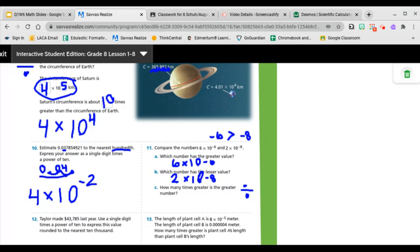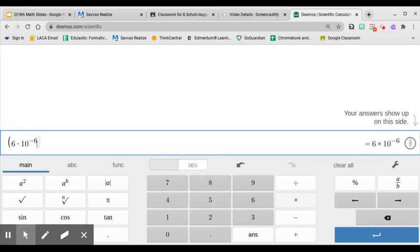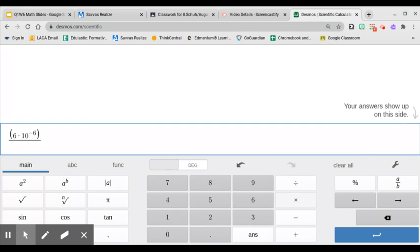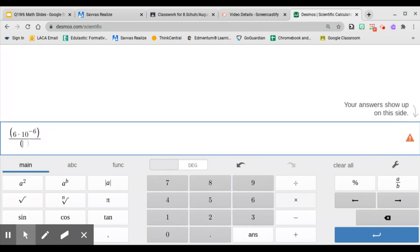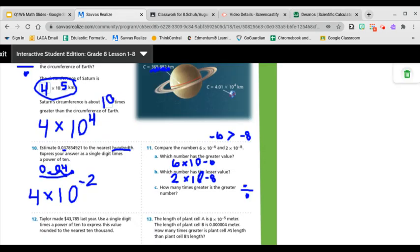So our bigger number is 6 times 10 to the negative 6. So I would do it like this. 6 times 6 times 10, and then carat, negative 6, and then parentheses, divided by, and then parentheses, 2 times 10 carat, I think it was, was it negative 8? Let me double check that. Yep. Yep. Okay.